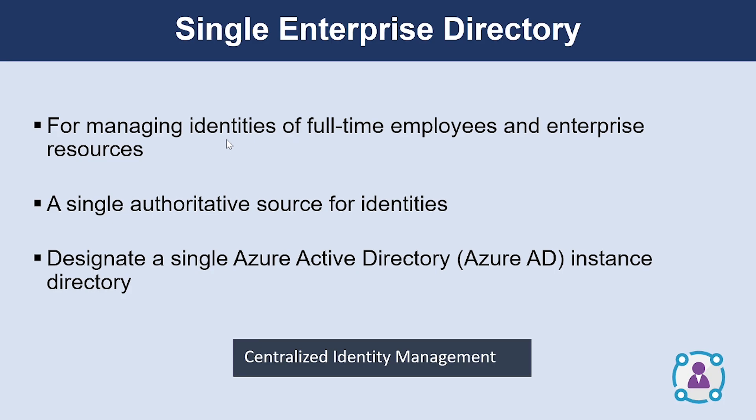Let's explore how to use a single enterprise directory. A single authoritative source for identity increases clarity and consistency for all roles in IT and security. This reduces security risk from human errors and automation failures resulting from complexity. By having a single authoritative source, teams that need to make changes to the directory can do so in one place and have confidence that their change will take effect anywhere. For Azure, designate a single Azure Active Directory instance as the authoritative source for corporate or organizational accounts.